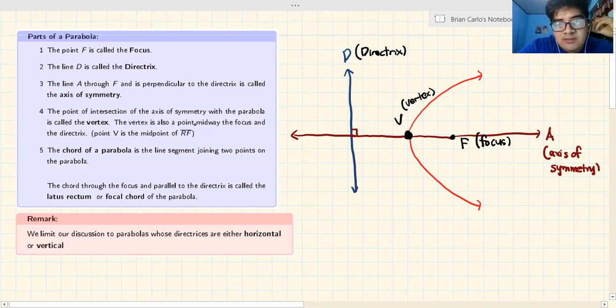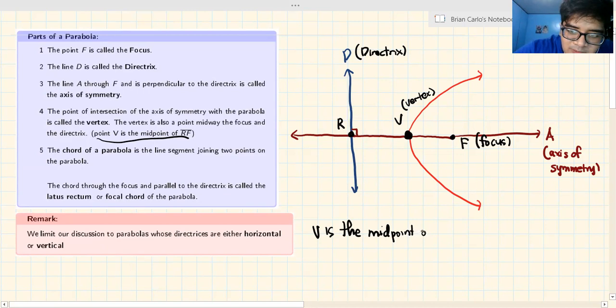The vertex is also called the midway of the focus and the directrix. Let's say we have a point R here on the directrix, this blue line. You can say V is the midpoint of segment RF. This is RF. V is the midpoint of segment RF, just to be clear.